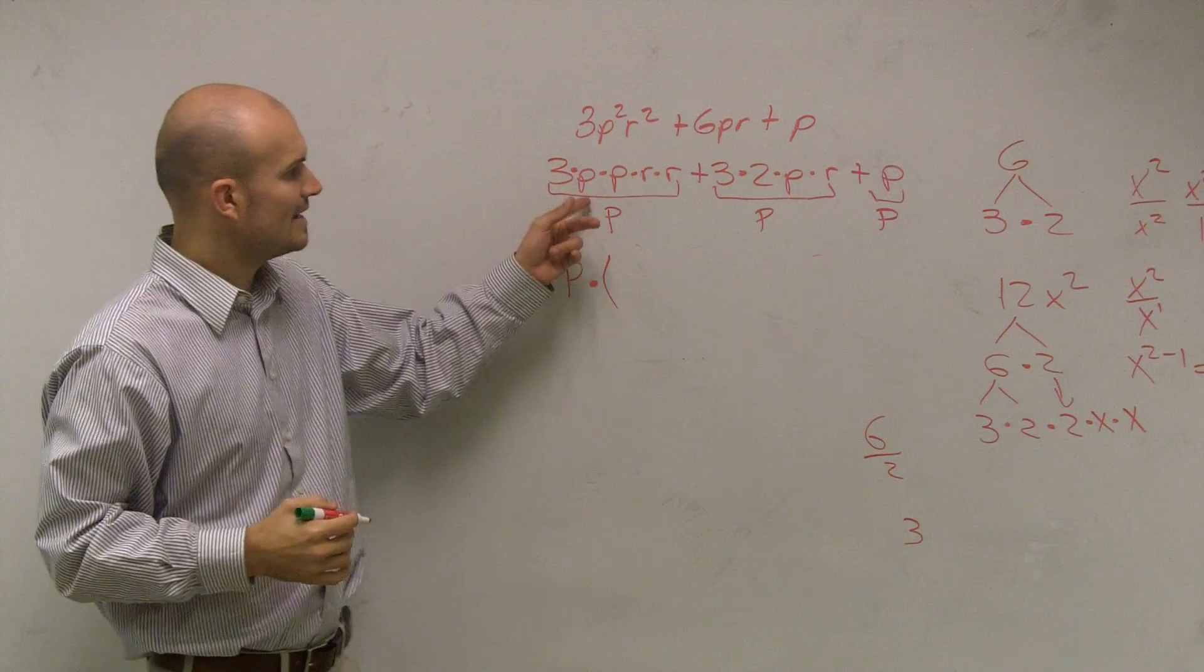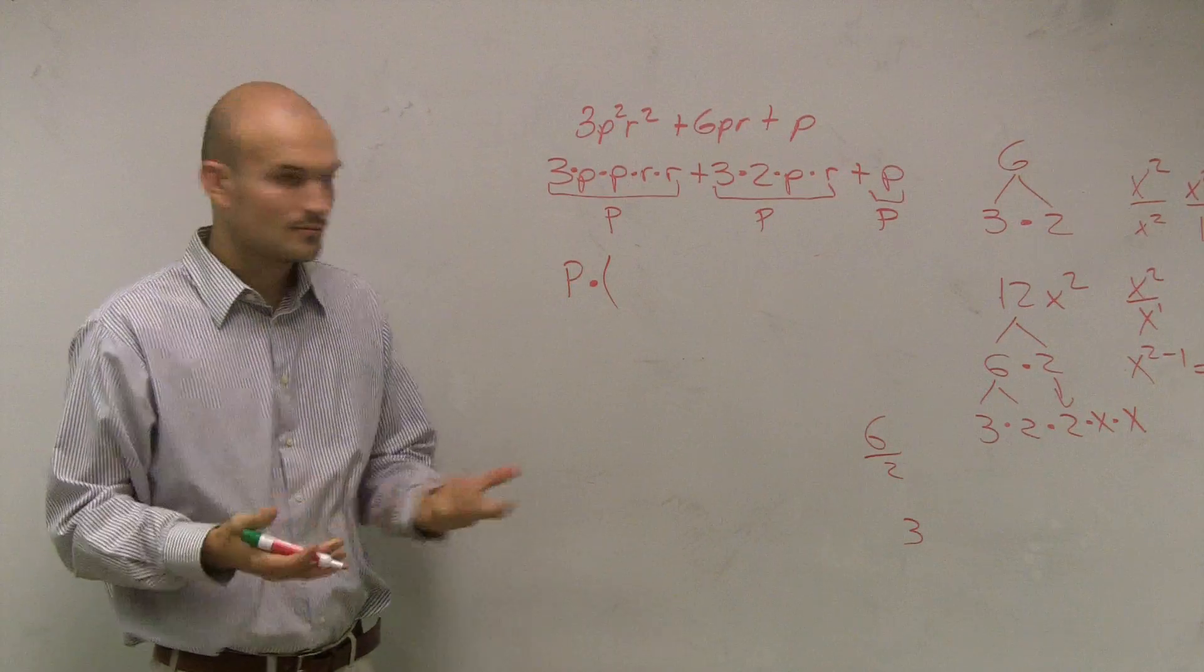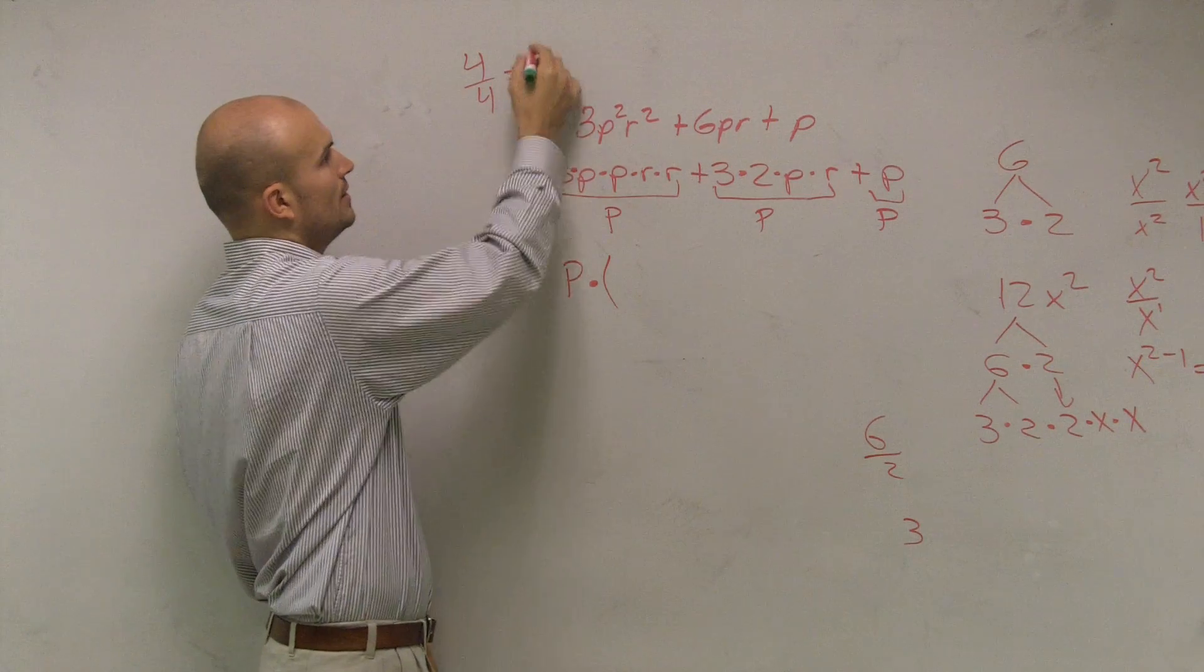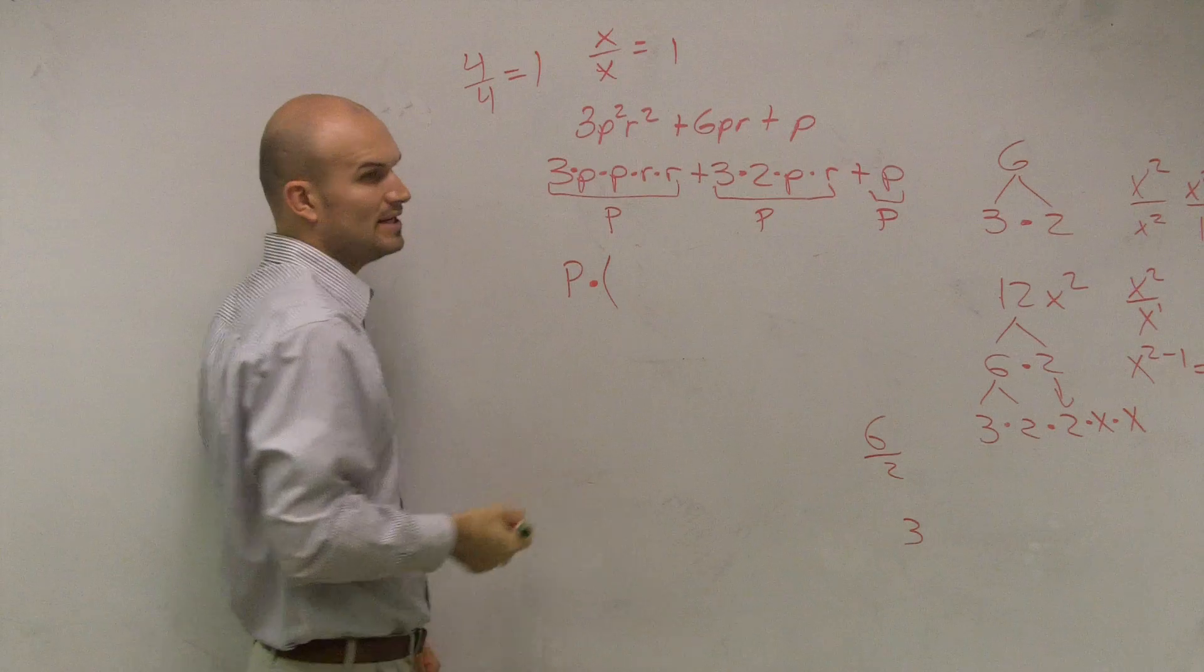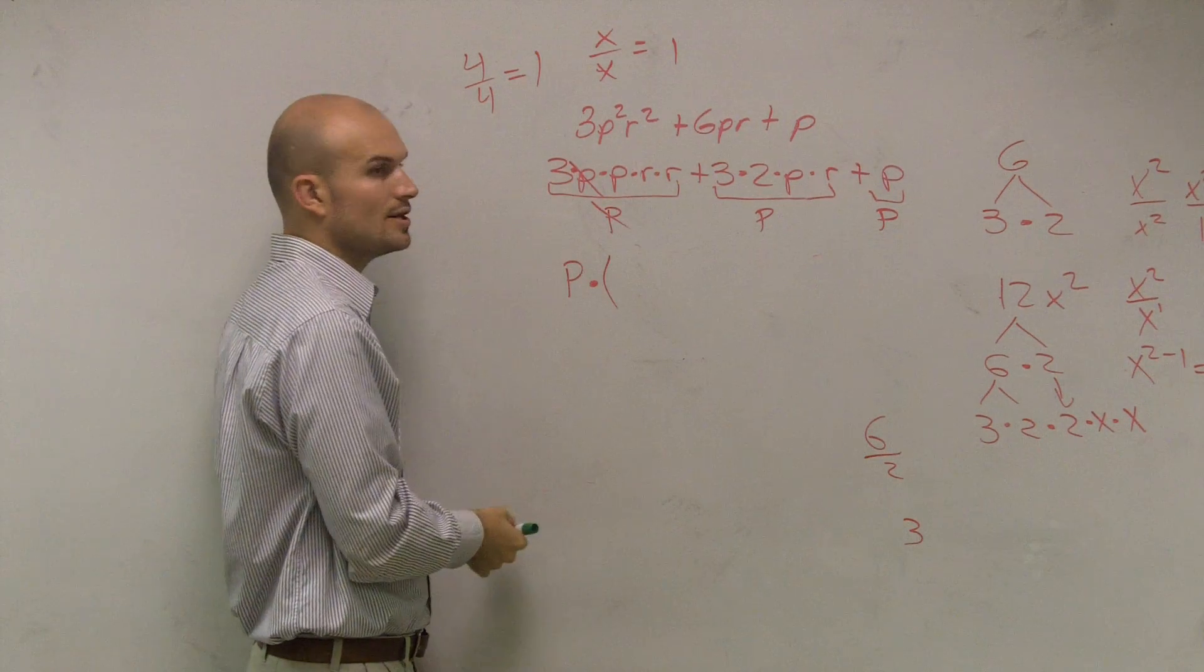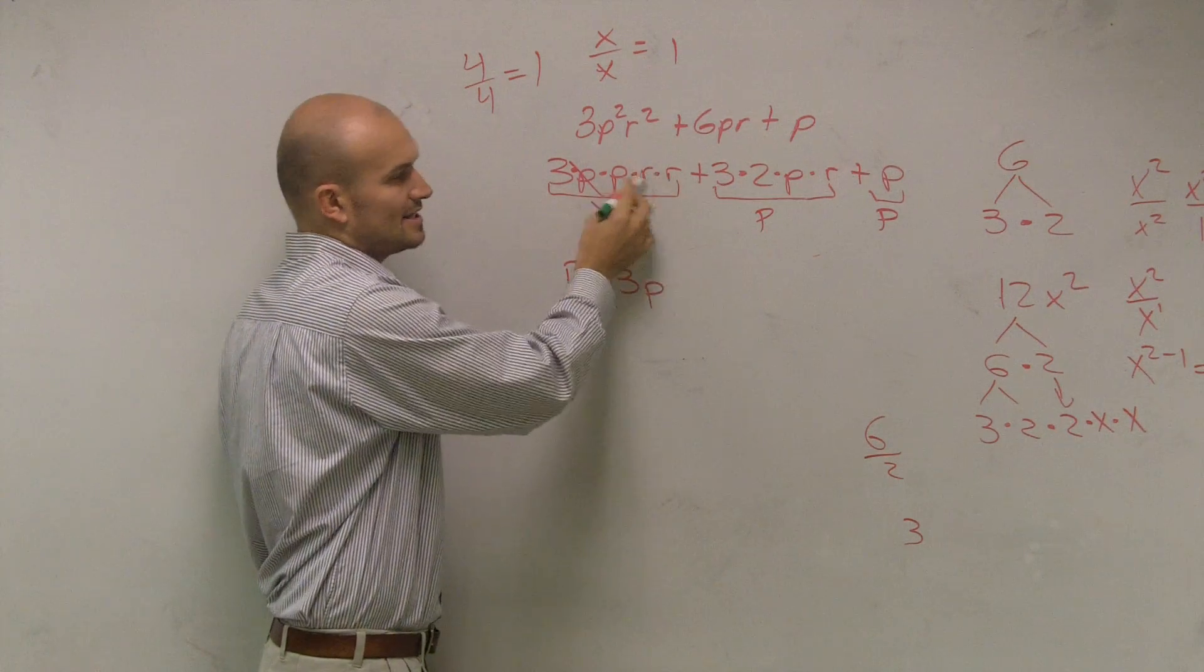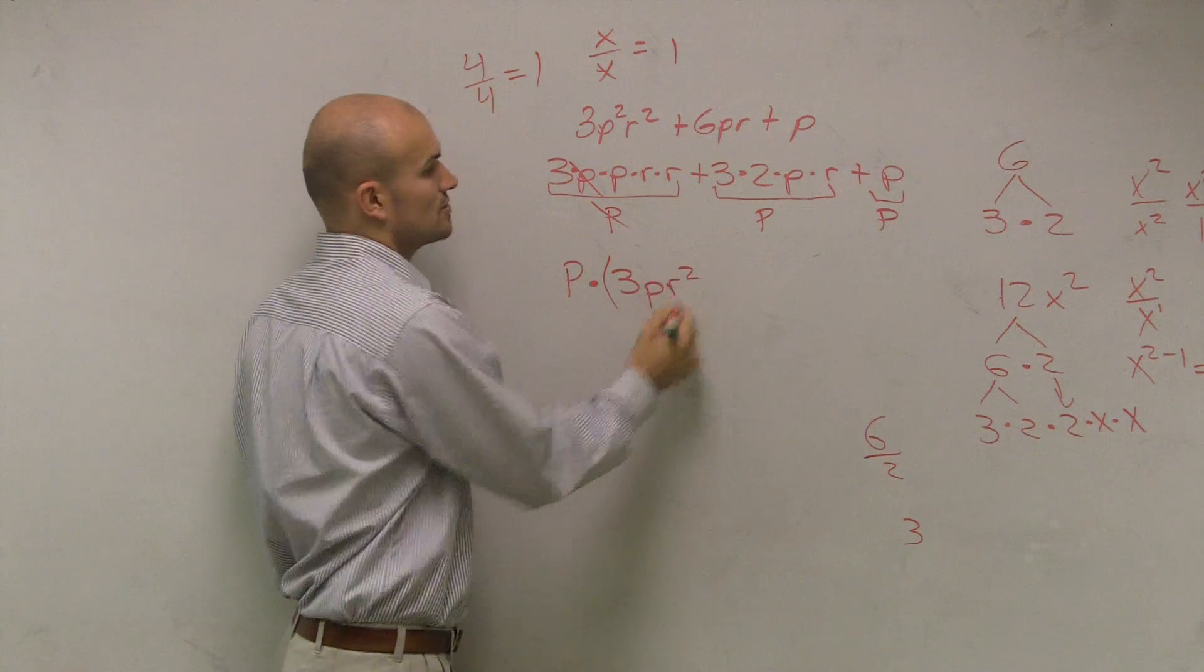What happens when you divide 3p times p times r times r divided by p? What happens when you divide 4 divided by 4? What does that equal? 1. So what do you think x divided by x equals? 1. What do you think p divided by p equals? 1. There you go. So the p cancels out. So I'm left with 3 times p. And did I do anything with the r times r? No. So I'm going to have to rewrite that as r squared.